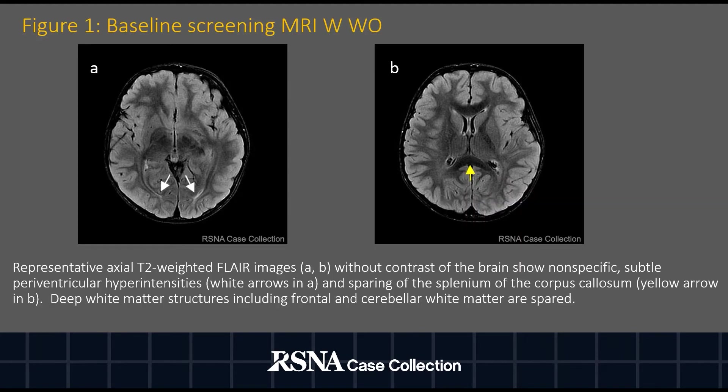On the baseline screening MRI with and without contrast, the axial T2-weighted FLAIR images showed nonspecific pseudoperiventricular hyperintensities and sparing of the splenium of the corpus callosum. Deep white matter structures including frontal and cerebellar white matter are spared.